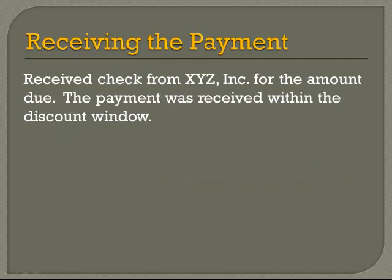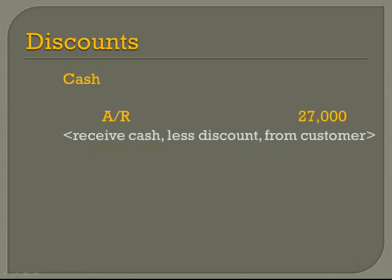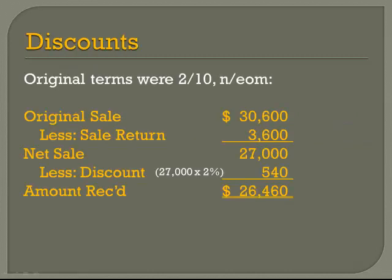A couple days later, we receive the check for the amount due, and this tells us the payment was received within the discount window. Remember: we originally sold them $30,600 worth of inventory, but they returned $3,600, so the net amount they owe us is $27,000 — that's the amount in accounts receivable right now. Because we're within the discount window, the $27,000 is multiplied by the 2% discount, which turns out to be $540. That means the amount of cash we receive in the form of the check is $26,460.